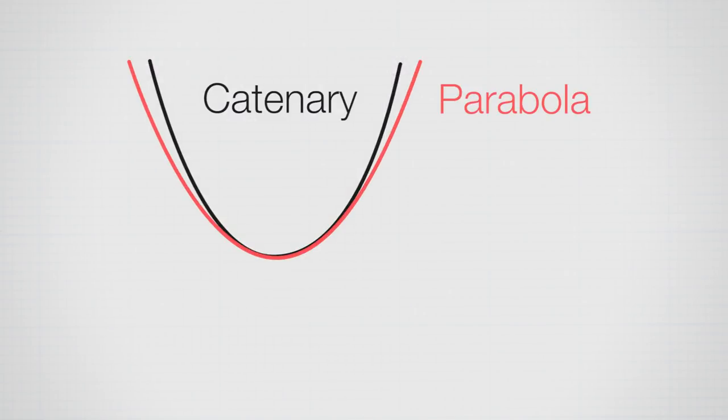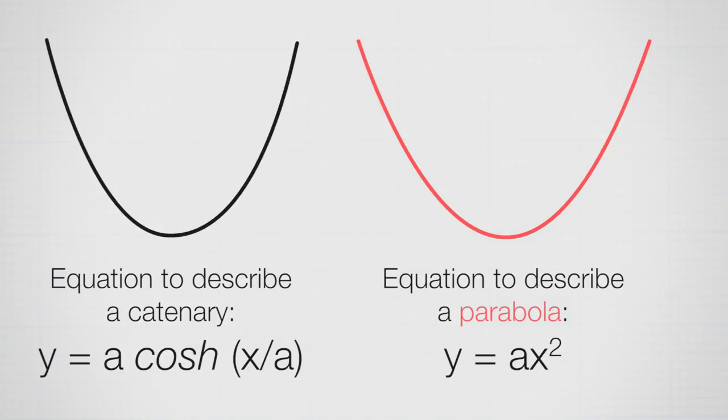They look very similar. However, mathematically, they're very different. So this catenary uses a hyperbolic cosine as its mathematical representation, whereas a parabola is much easier to represent because it just uses a polynomial.